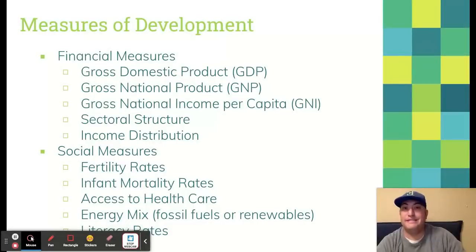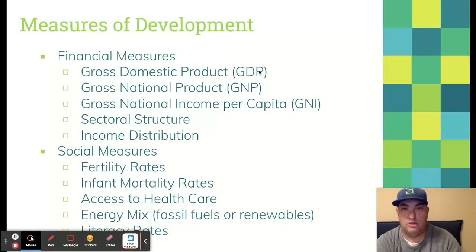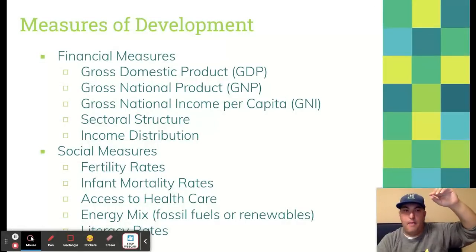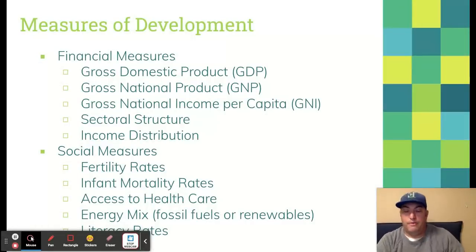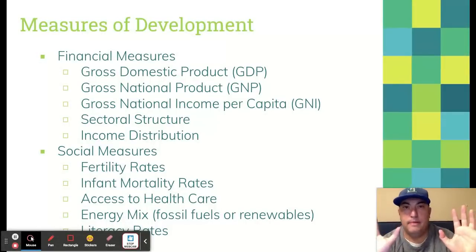Measures of development — sorry, no cool fancy image here, just words. When we're talking about different countries around the world and how developed they are, there are lots of statistics that geographers take into account. Five of these are financial measures: gross domestic product, gross national product, GNI, sectoral structure, which we talked about, and the distribution of income within the country. Is the top 1% making 20% of the income, 50%, 70%, 80%? That's what we mean with income distribution. I'm not going to get into all of these because that's probably another 45-minute video — go find Jacob Clifford, he's the econ guy.